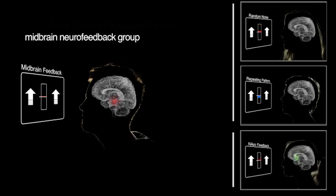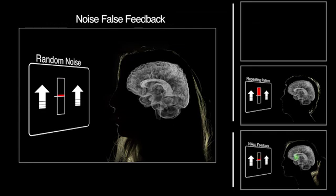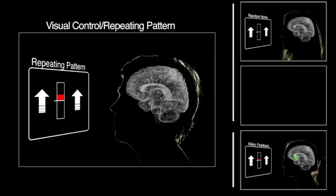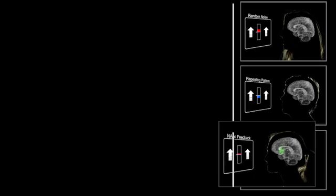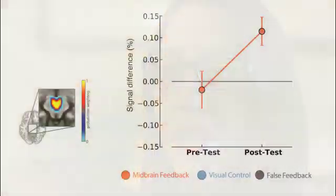To test the specificity of these findings, we compared this neurofeedback group to two comparison groups and an alternate feedback group. The comparison groups also practiced generating motivational states with either noise that they believed was neurofeedback or with a simple repeating pattern. The alternate neurofeedback group received valid feedback from the nucleus accumbens. None of these other groups showed significant activation in target regions during the post-test.